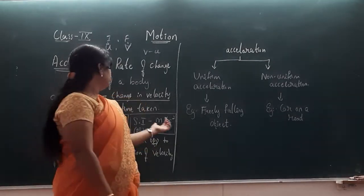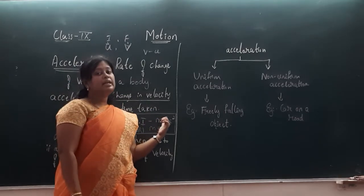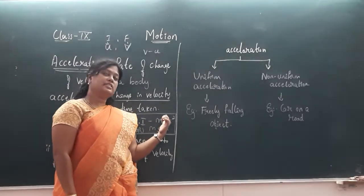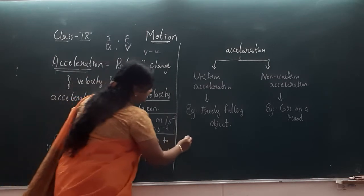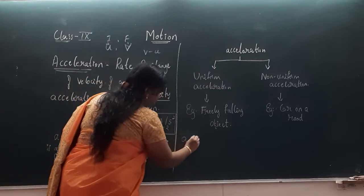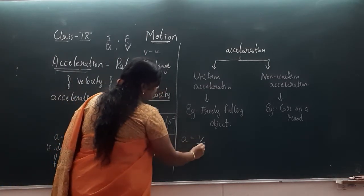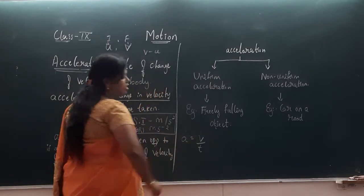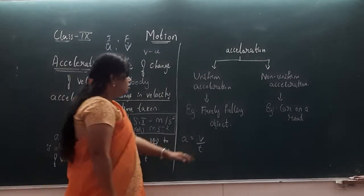The unit of velocity is meter per second. So acceleration is velocity divided by time. Let us now work out the unit of acceleration.